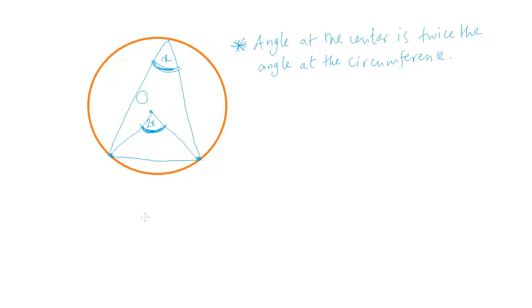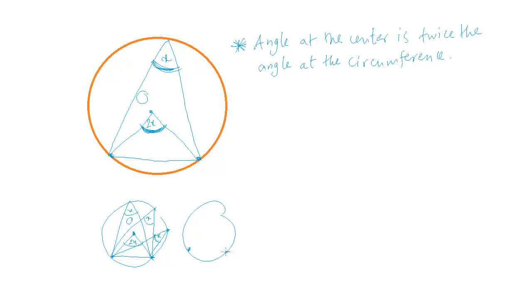It doesn't matter how the diagram appears — the angle at the center is always twice the angle at the circumference for the same chord or arc. Remember from the first proposition: any angle at the circumference subtended by the same chord or arc is equal. So regardless of where the circumference angle is drawn, it will still be half the center angle.